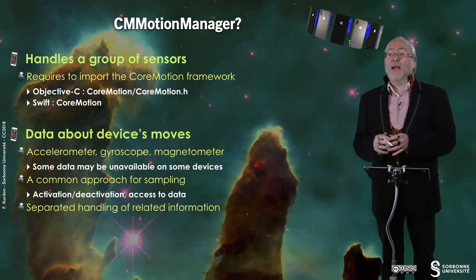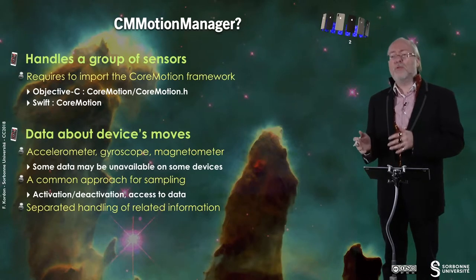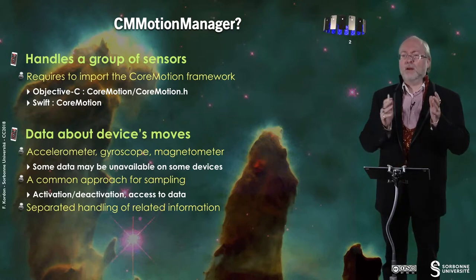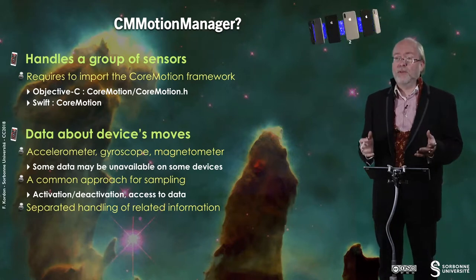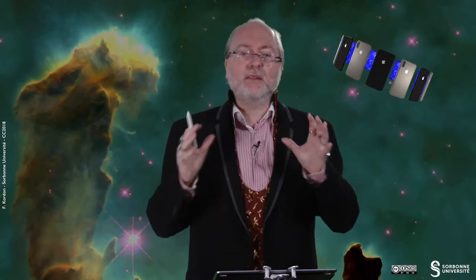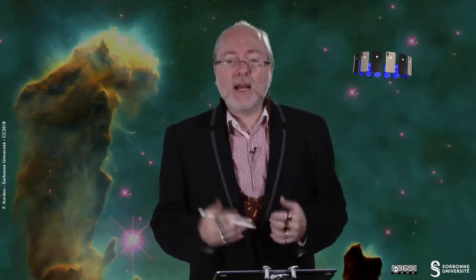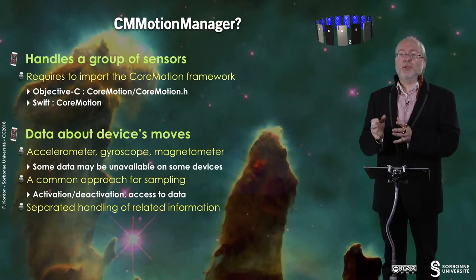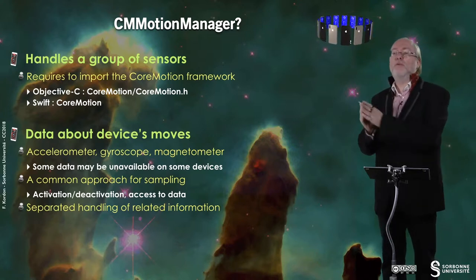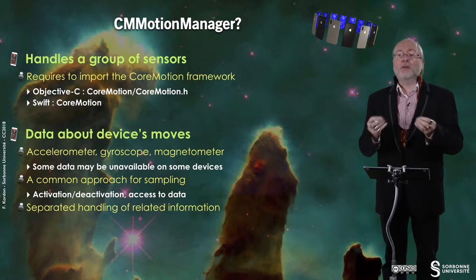You get information about the device's movement thanks to the accelerometer, the gyroscope, and the magnetometer. Some data may be unavailable on some devices because most devices have an accelerometer and a gyroscope, but only a few have a magnetometer — for example, the iPod Touch doesn't have one. All this data is sampled in a common way, but you have separate handling for each sensor because the data fetched is not of the same nature.